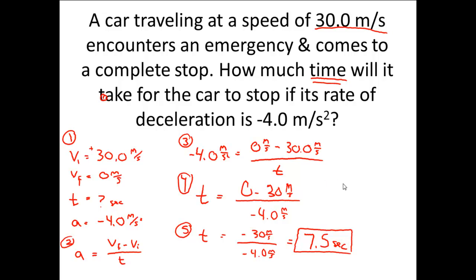The last thing I want to encourage students to do is step six: does your answer make sense? We had a car traveling with positive velocity and negative acceleration. Whenever you have a positive velocity and negative acceleration, they're fighting each other and the object is slowing down. So going from 30 meters per second, slowing down to a complete stop — yes, 7.5 seconds makes sense. Always double-check that your number makes sense.